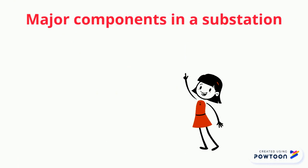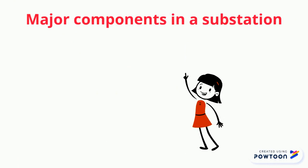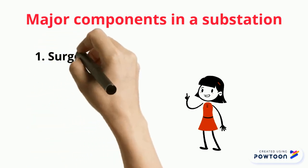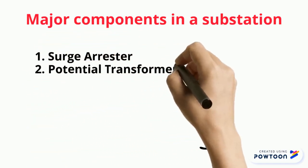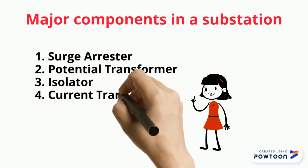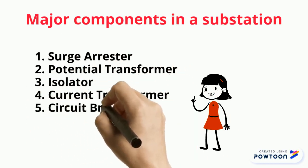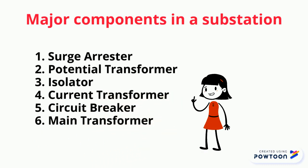Major components in a substation: 1. Surge Arrester, 2. Potential Transformer, 3. Isolator, 4. Current Transformer, 5. Circuit Breaker, 6. Main Transformer.